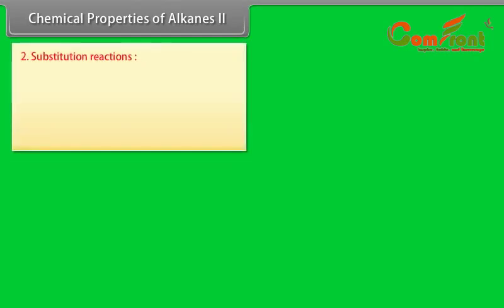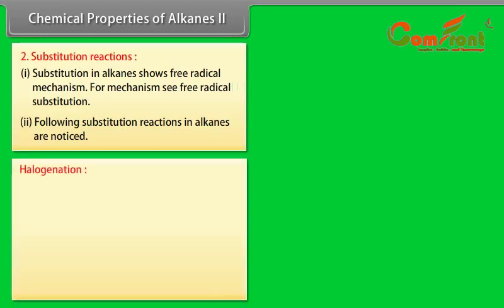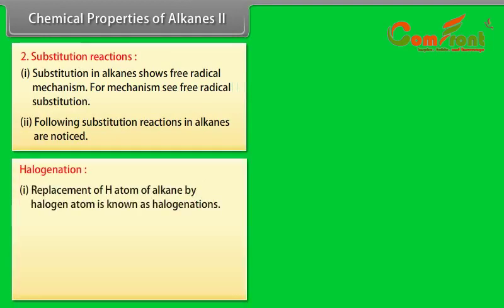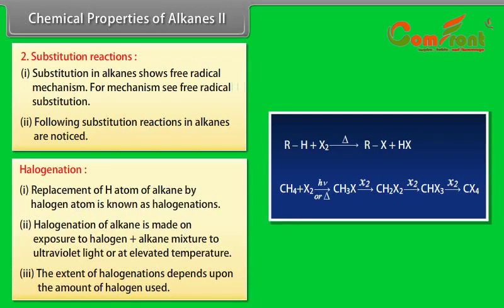Chemical properties of alkanes, part 2 — Substitution reactions: 1. Substitution in alkanes shows free radical mechanism. 2. The following substitution reactions in alkanes are noticed. Halogenation: 1. Replacement of a hydrogen atom of an alkane by a halogen atom is known as halogenation. 2. Halogenation of alkane is carried out on exposure of the halogen-alkane mixture to ultraviolet light or at elevated temperature. 3. The extent of halogenation depends upon the amount of halogen used.